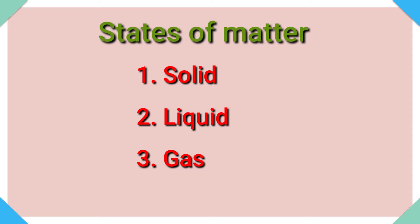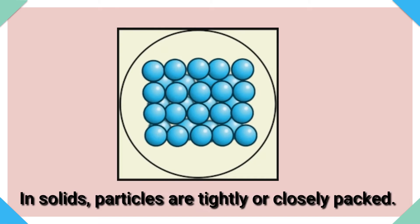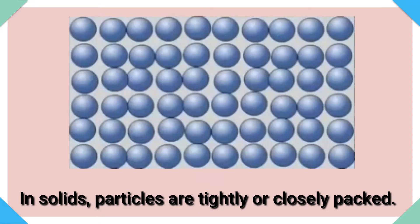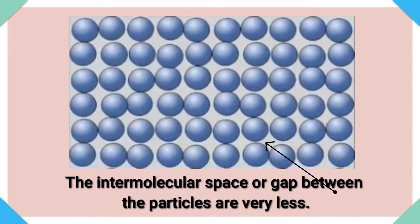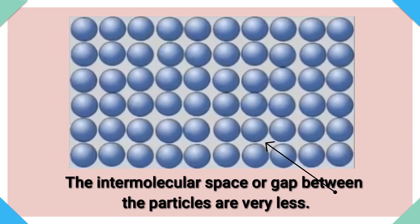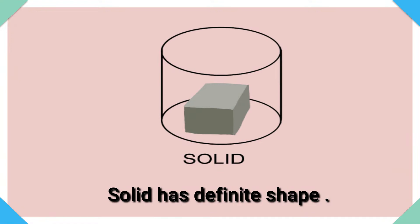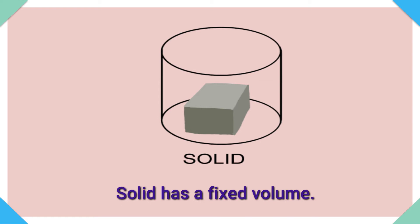Let's know the different states of matter. First one: solid state. In solids, particles are tightly or closely packed. The intermolecular space or gap between the particles is very less. Hence, it is difficult to compress them. Solid has a definite shape, meaning it cannot change its shape on its own. Solid has a fixed volume.